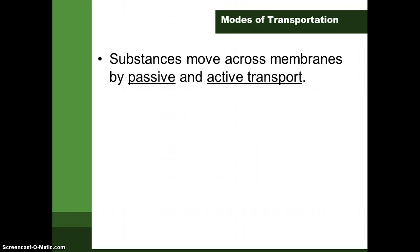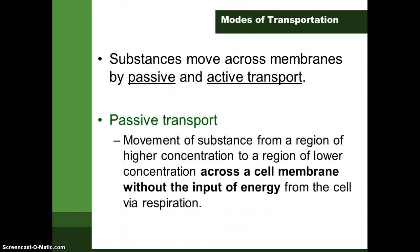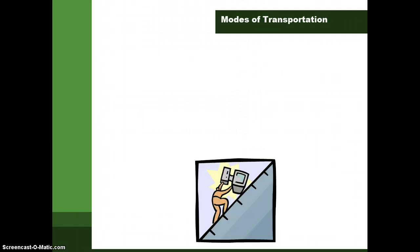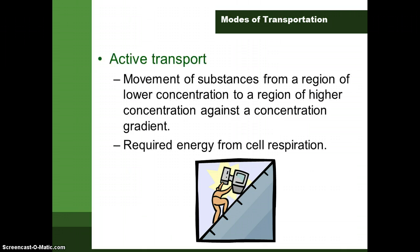There are two types of transport: passive and active. Passive transport means you do not need energy for the substance to move. Substances generally move from a higher concentration to a region of lower concentration without the need for energy from the cell. Active transport, on the other hand, is the movement of substances from a region of lower concentration to a region of higher concentration against a concentration gradient. Energy is required for this process, and normally energy comes from cell respiration.